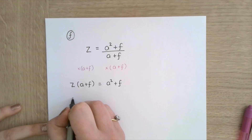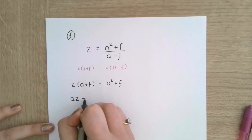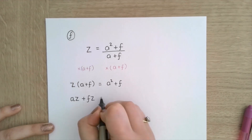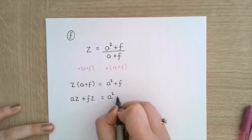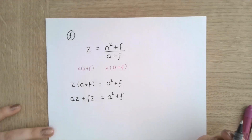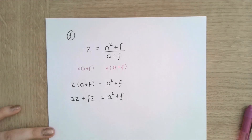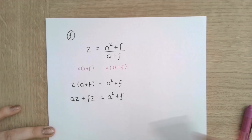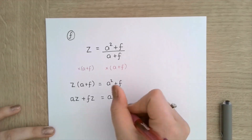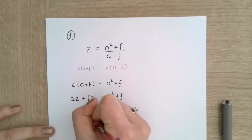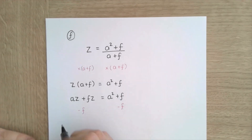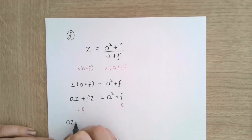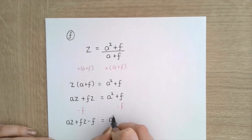Expand out my brackets here, so az plus fz equals a squared plus f. So I'm going to subtract f from both sides — subtract f and subtract f — leaving me with az plus fz minus f equals a squared.